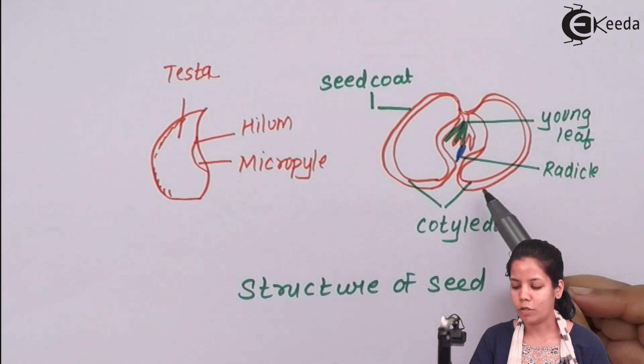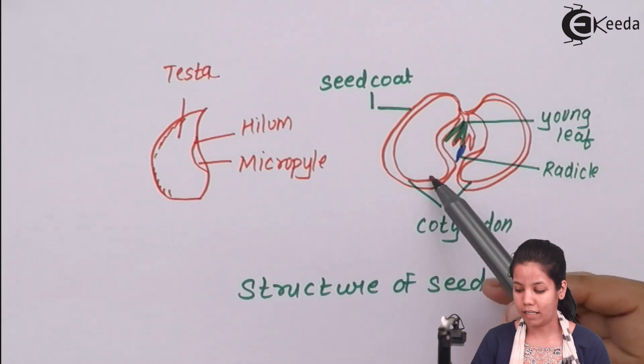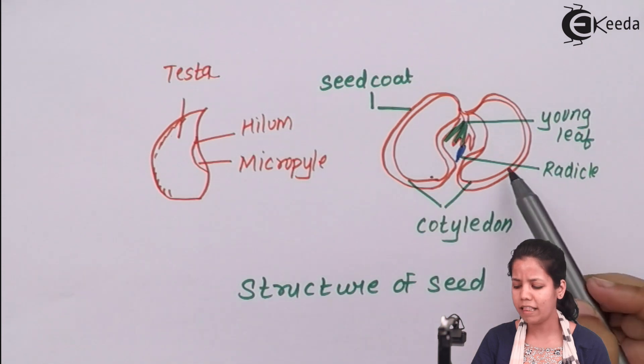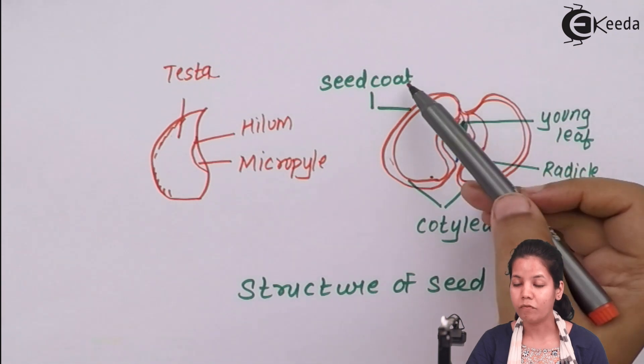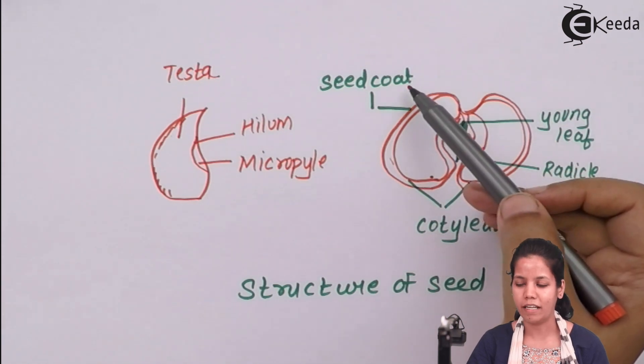This represents a dicotyledon seed, the dicot seed. It consists of one cotyledon and the second cotyledon. There is a presence of an envelope termed as seed coat which protects the seed in wear and tear conditions.